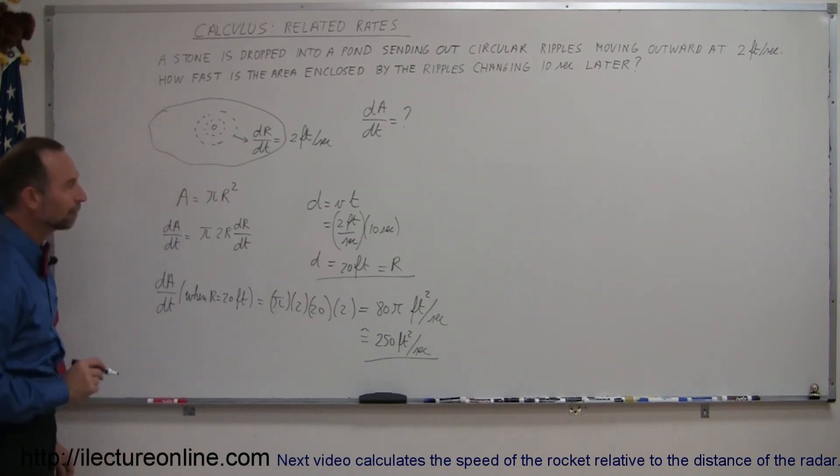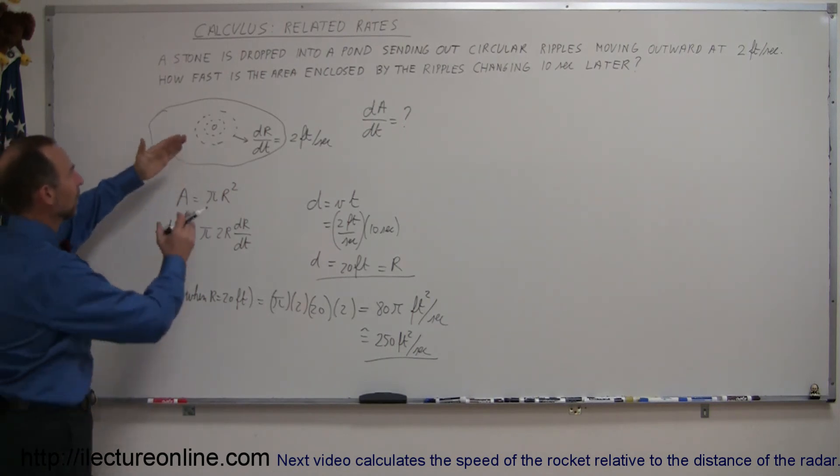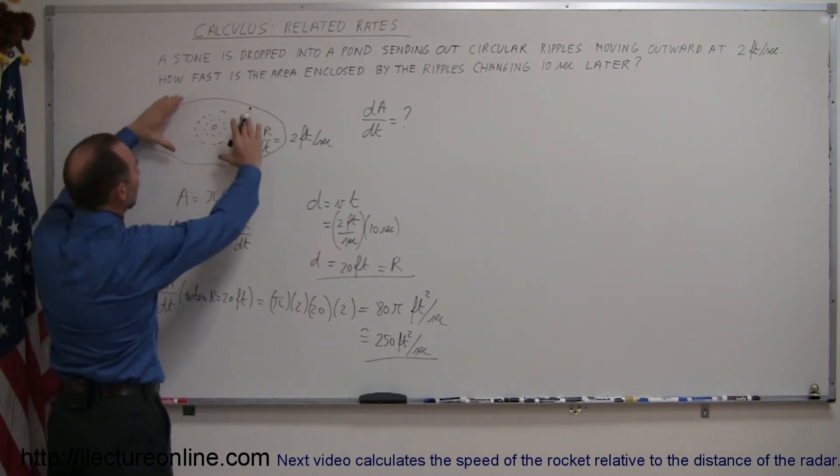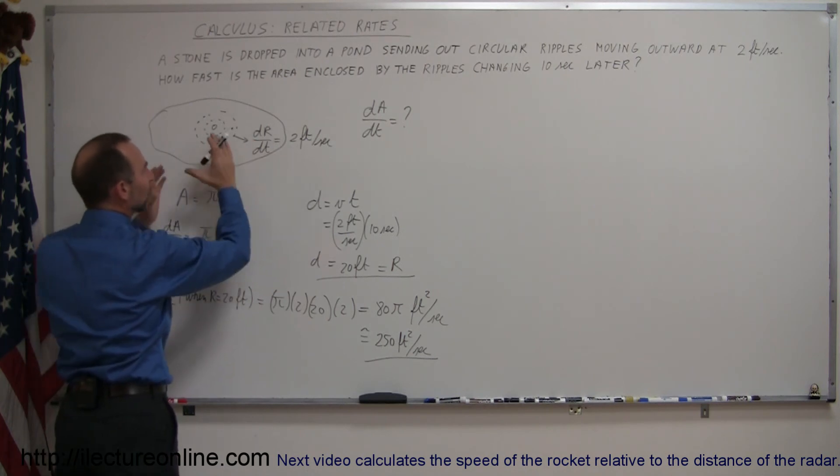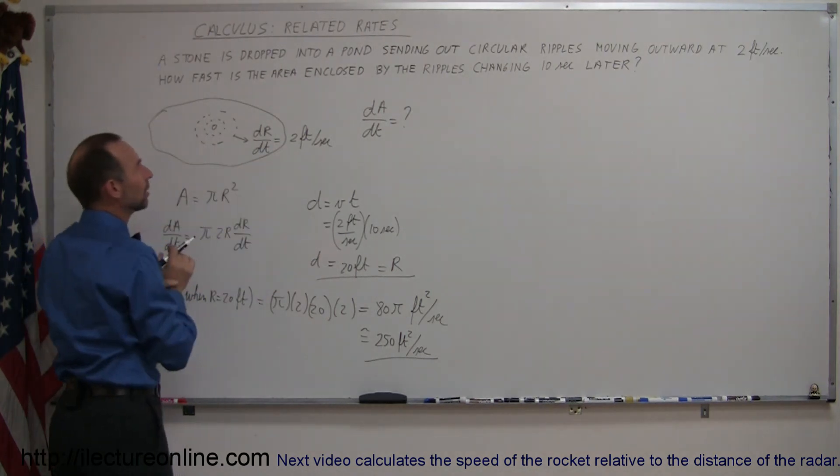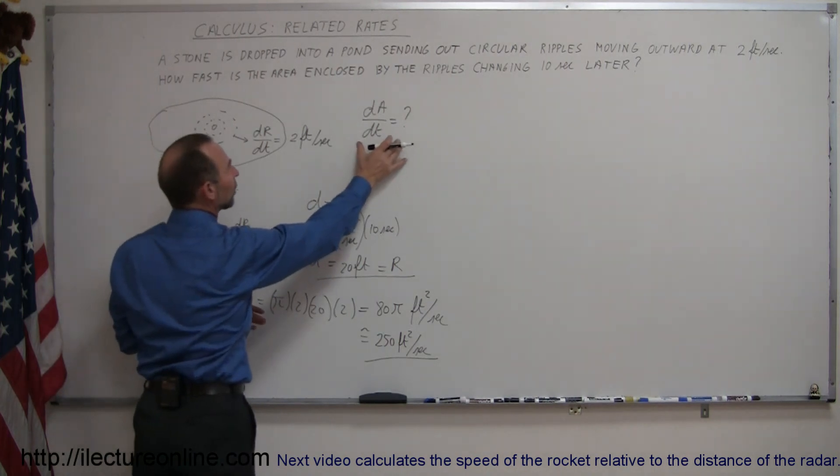That's how you do a problem like that. To recap, they gave us a problem where we drop a rock into a pond and we have circular ripples moving outward. They tell us the rate at which the ripples move outward, 2 feet per second, and they want to know the change in the area per unit time.